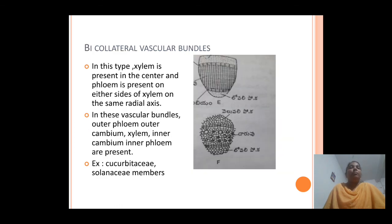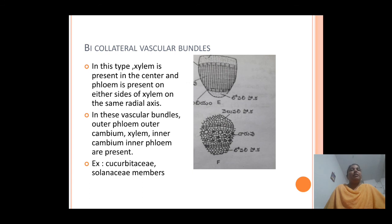The second type is bicollateral vascular bundles. Here xylem is present in the center and phloem is present on either side of the xylem along the same radius. From outer to inner side, four tissue regions are found: outer phloem, outer cambium, xylem, inner cambium, and inner phloem. This type of bicollateral vascular bundles is mostly found in Cucurbitaceae and Solanaceae members.